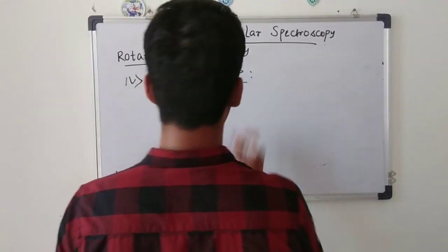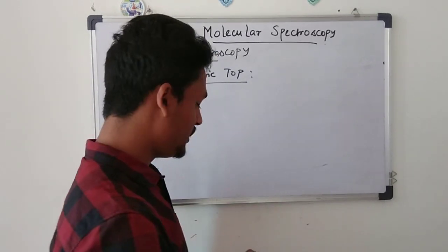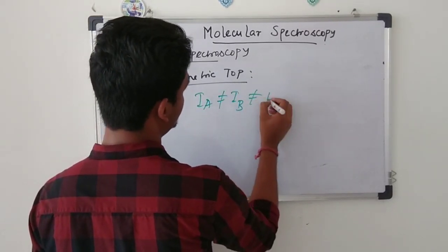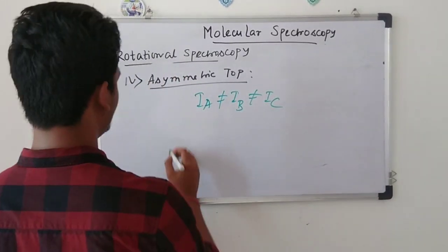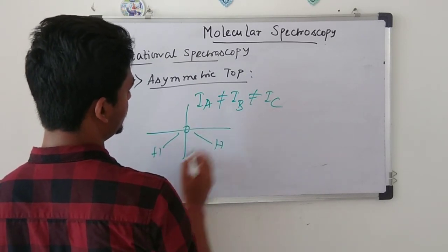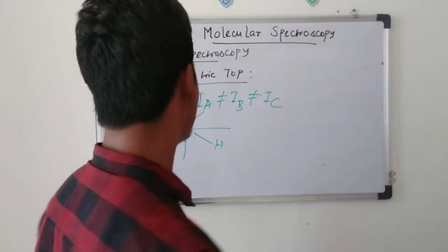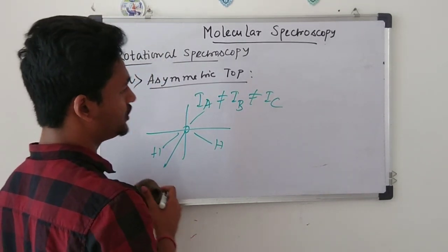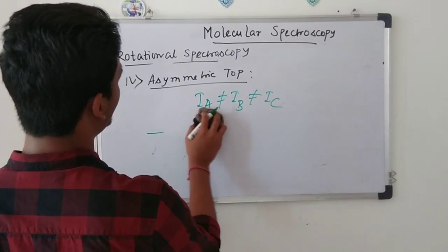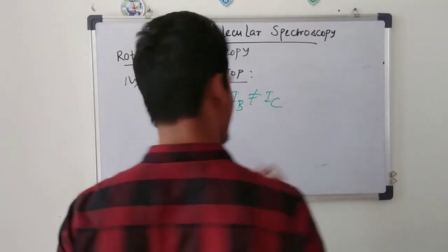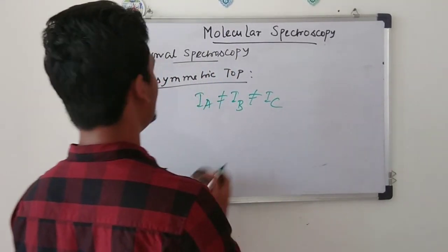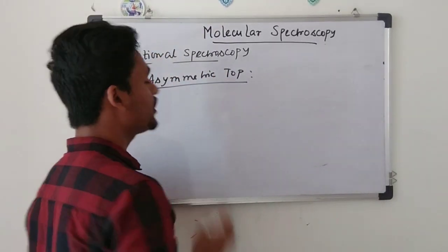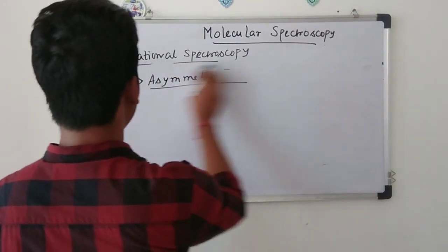Asymmetric top molecules have no special relationship among their moments of inertia: IA ≠ IB ≠ IC. Water (H₂O) is a classic example. Any molecule that does not fit into the linear, symmetric top, or spherical top categories is classified as an asymmetric top.